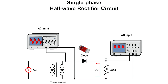The anode side of the diode is negative during the negative half cycle of the AC input wave. The diode is reverse biased, which acts like an open switch and does not allow current to flow to the load. The half-wave rectifier makes use of only half of the AC input wave.